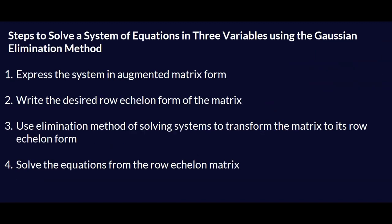Now let's talk about the steps we need to follow to solve a system of equations in three variables using Gaussian elimination. First, write the system in augmented matrix form. Then write the desired row echelon form you're aiming for. Use elimination to transform the augmented matrix into that row echelon form. Finally, create equations from that form and solve them to get the values of the variables.